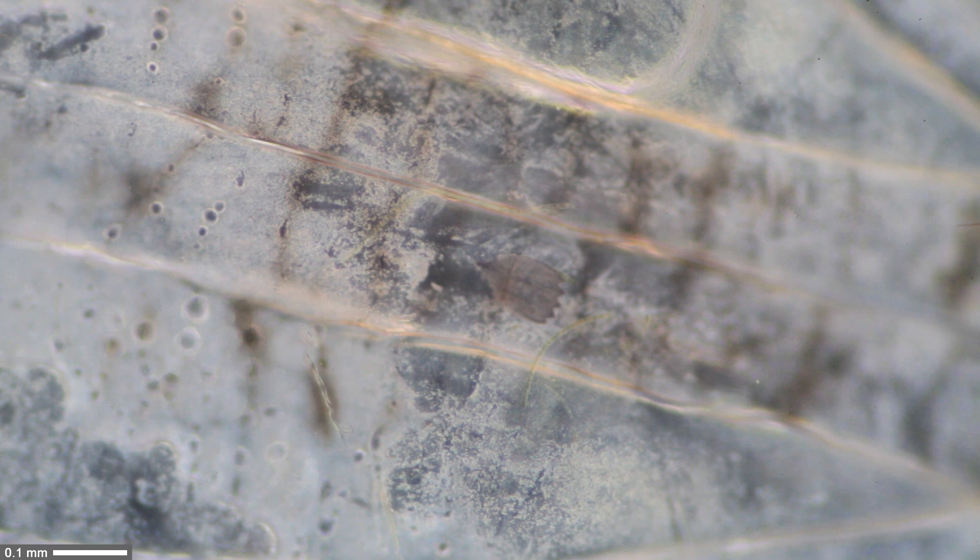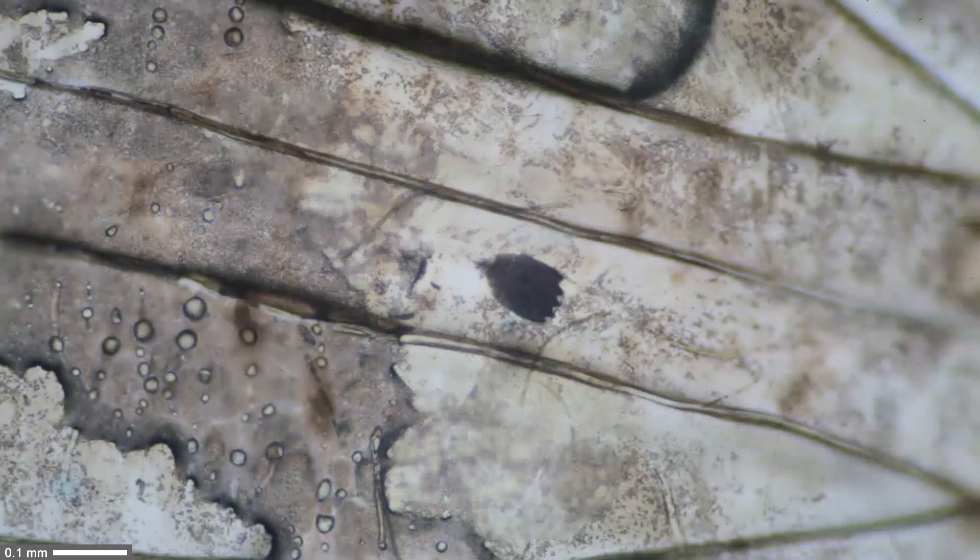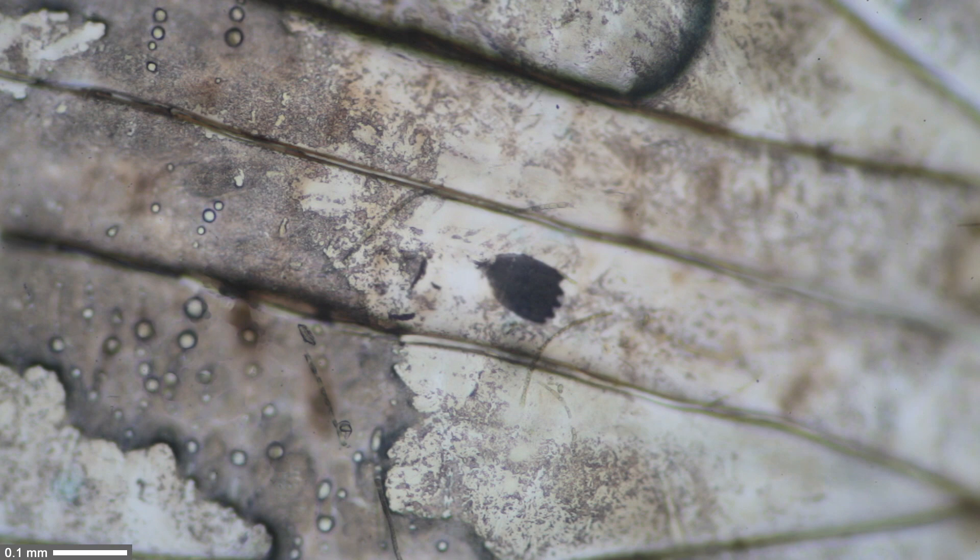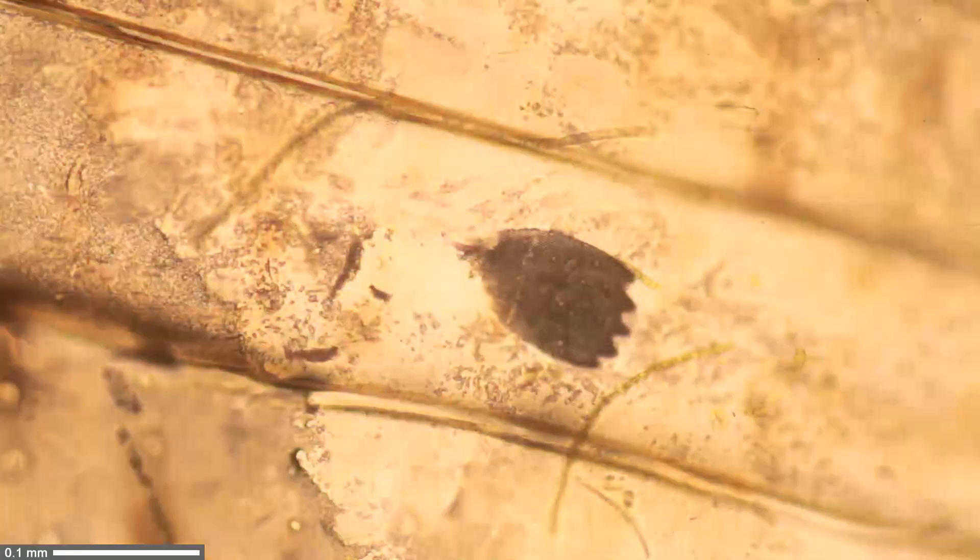Now I'm back in bright field. You can actually see that in bright field, the scale can be seen much better than in dark field. What you have to do in microscopy is you have to try different mounting media, you have to try different illumination techniques, because different techniques are suitable for different things that you want to observe. That's again in dark field, and you can see that the contrast of the scale is not as high as in bright field.